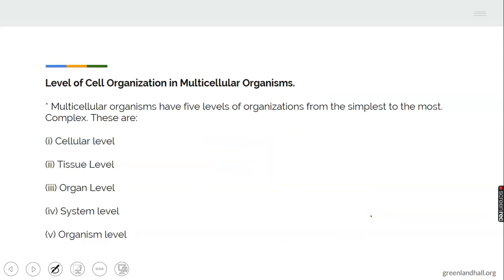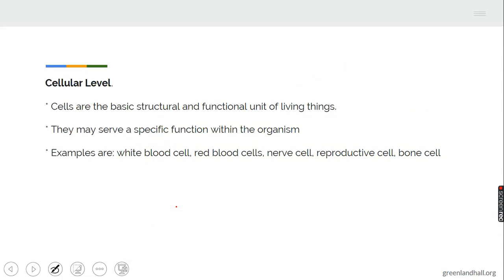Level of cell organization in multicellular organisms. Multicellular organisms have five levels of organization from the simplest to the complex. These are the cellular level, the tissue level, the organ level, the system level and the organism level. We define cell as a basic structural and functional unit of living things that has a specific function within the organisms. Examples of cells are the white blood cell, the red blood cell, the nerve cell and the reproductive cell and bone cell.